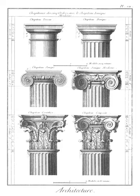Bays: internal compartments of a building, each divided from the other by subtle means such as the boundaries implied by divisions marked in the side walls or the ceiling. Also external divisions of a building by fenestration.